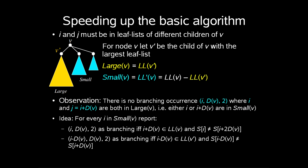So the idea is for every i in Small(v) we report (i, D(v), 2) as branching if and only if i+D(v) is in LL(v) and S[i] ≠ S[i+2D(v)]. Also (i-D(v), D(v), 2) as branching if and only if i-D(v) is in LL(v') and S[i-D(v)] ≠ S[i+D(v)]. The first part will find all branching occurrences of LL(v) at positions in Small(v). The second part will find all branching occurrences of LL(v)LL(v) at positions in Large(v).